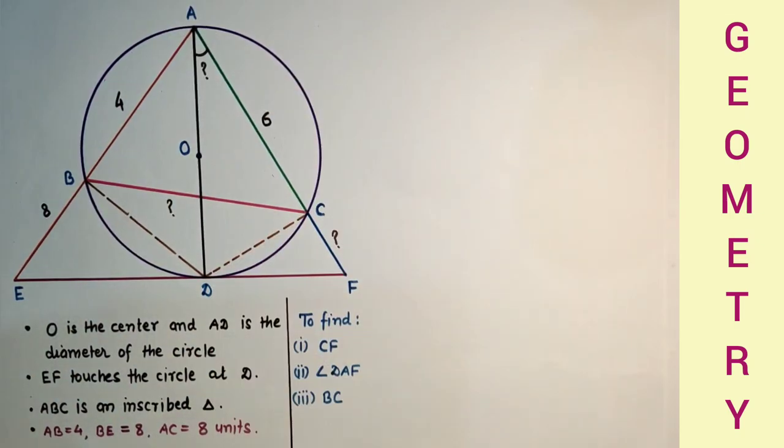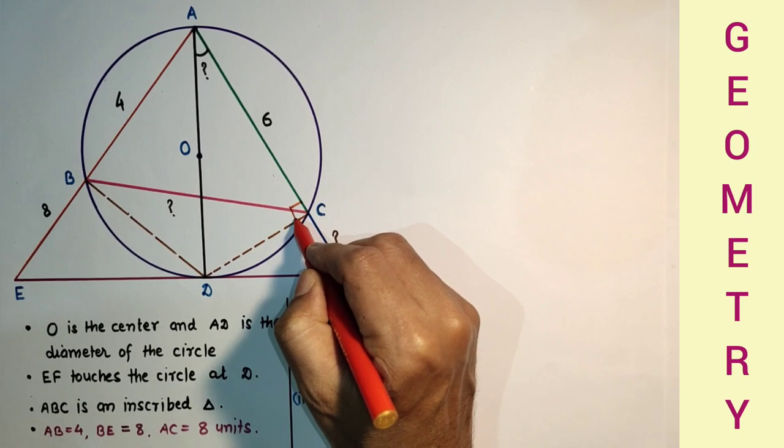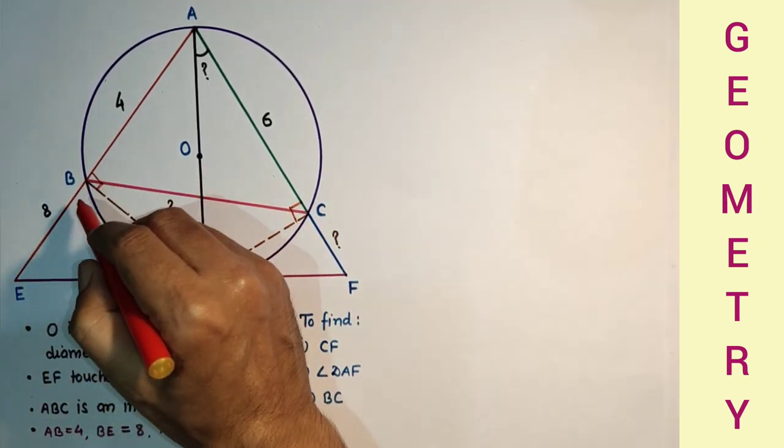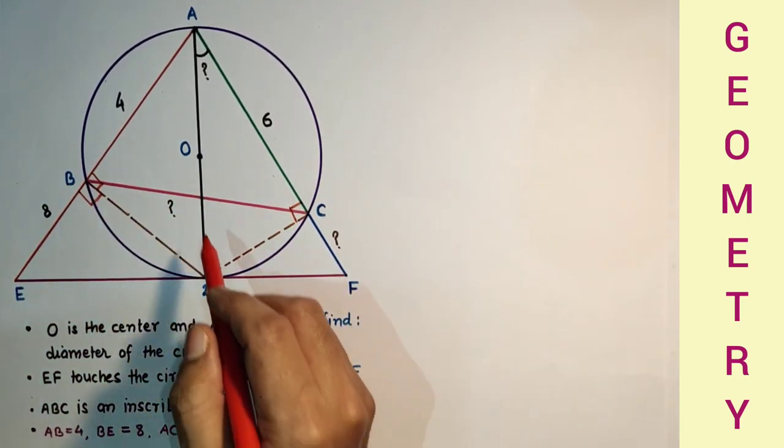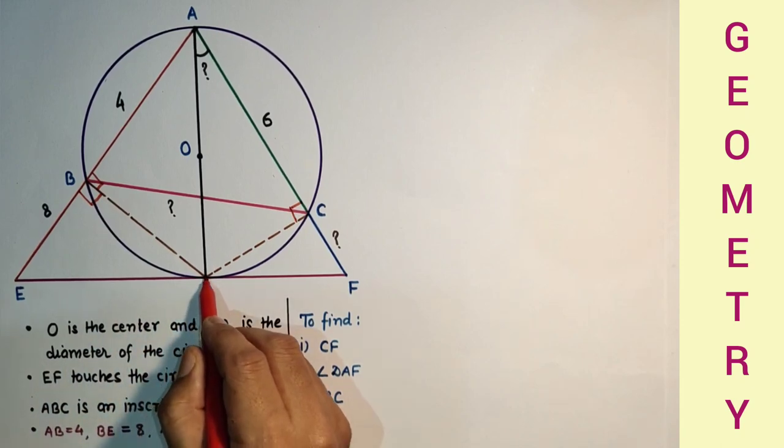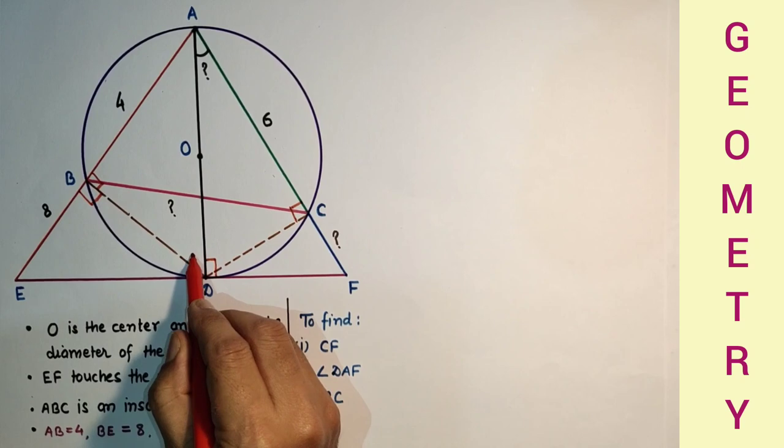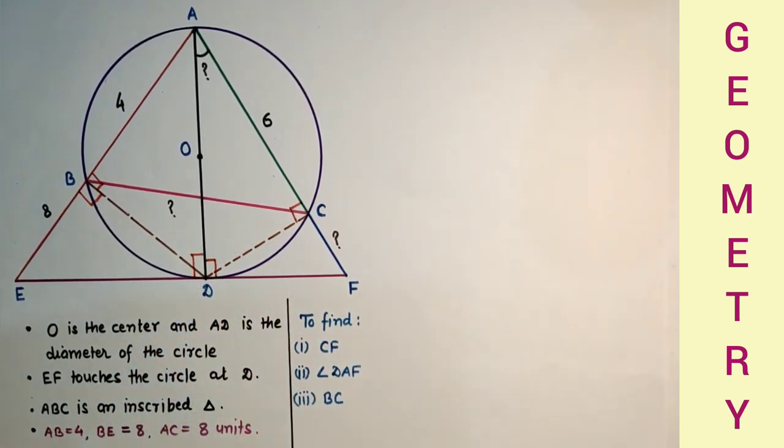Since AD is diameter, therefore this angle is 90 degrees, and this angle also 90 degrees. This angle is also 90 degrees. And radius and tangent at the point of contact will also be 90 degrees. So this is right angle, and this is also right angle.